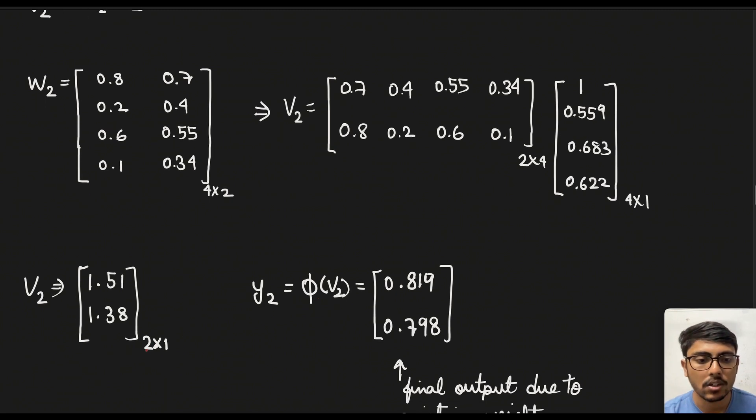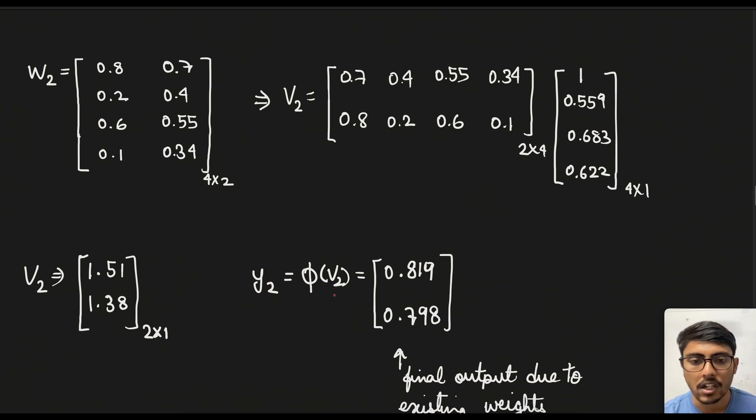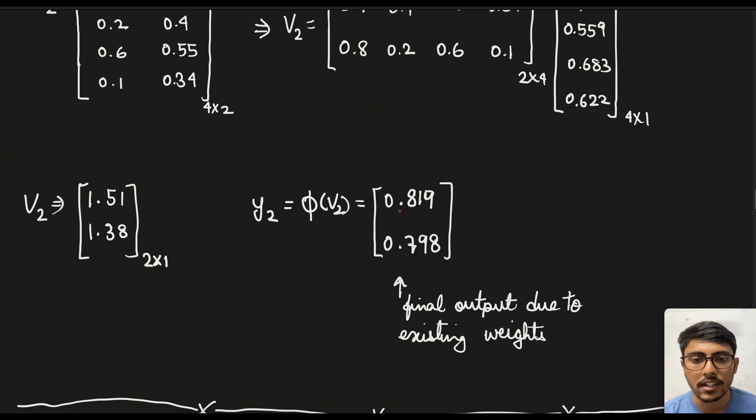Now induced field will be the transpose of this which becomes 2 × 4 and the output for the first layer which is 4 × 1 with the bias. So we get v2 as this 2 × 1 multiplying both of these. Now we need to create the output for this layer which is the activation function. So if we put it that way we get this 0.819 and 0.718.